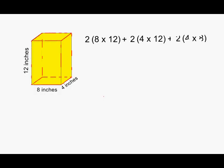And the top surface has dimensions of 4 by 8. Because the top surface is 4 by 8, the bottom surface is also 4 by 8, so once again we are going to write a 2 on the outside of our parentheses.